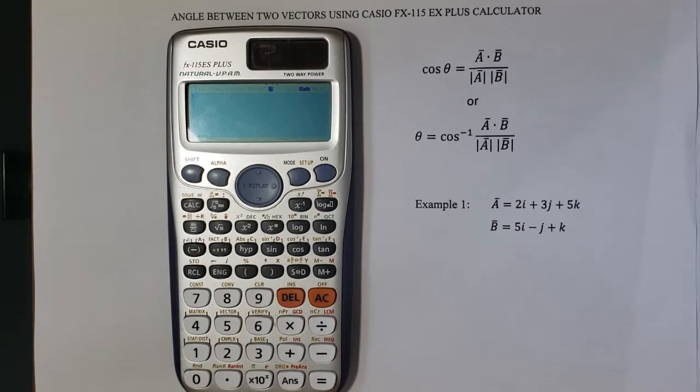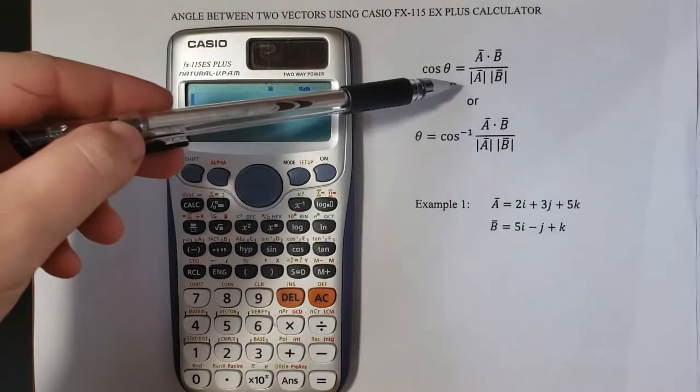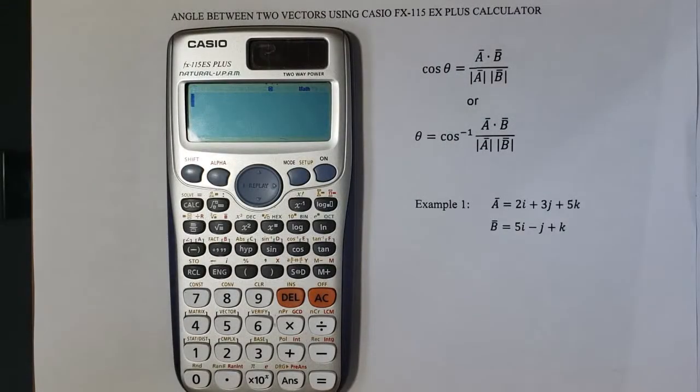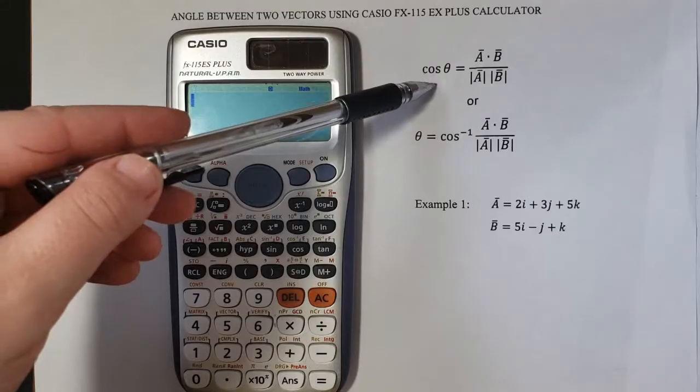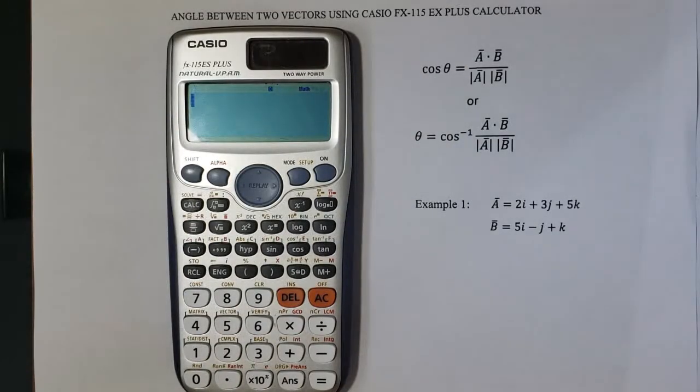Before doing the example, if we want to find the angle between two vectors, we use this equation here. We can see on the left side of the equation we have cosine of the angle and on the right side we have a fraction.